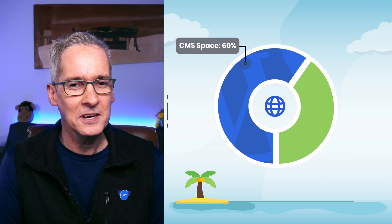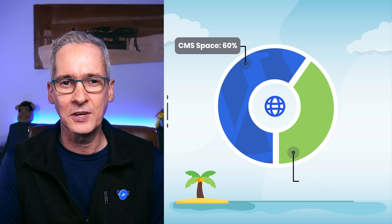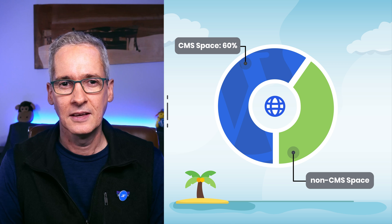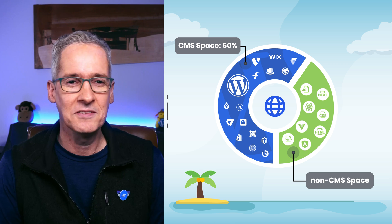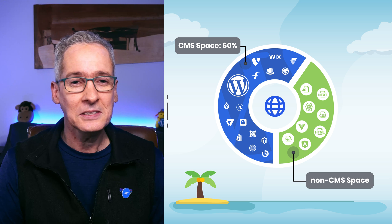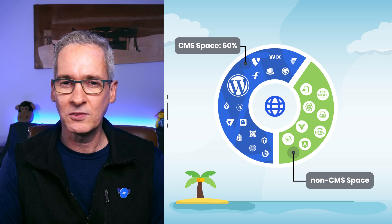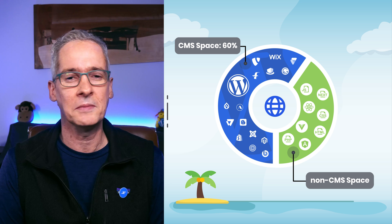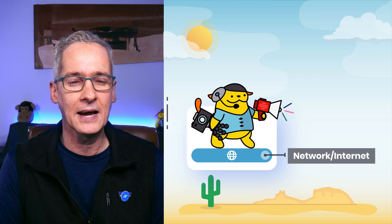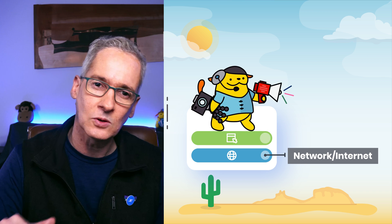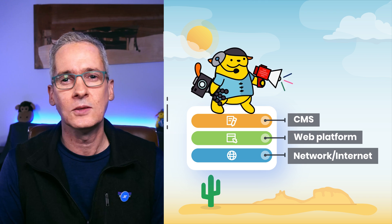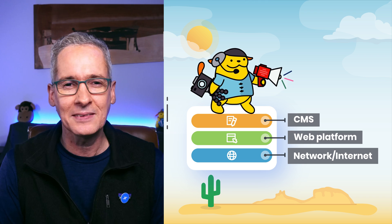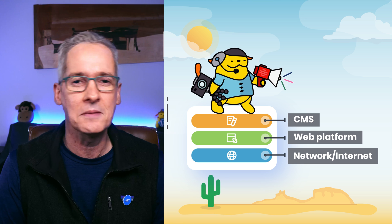Content management systems are a very popular way to create and publish web content, and there are many options available out there to choose from. In fact, today about 60% of all sites are powered by some form of CMS. The key reason behind such popularity is that CMSs provide layers of abstraction on top of the open web, making it much easier for everyone to tackle the complexity of web content creation, management, and publishing.